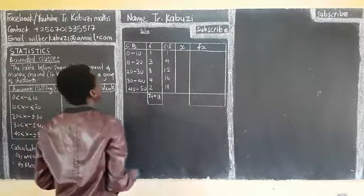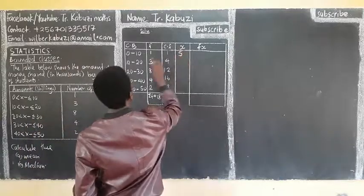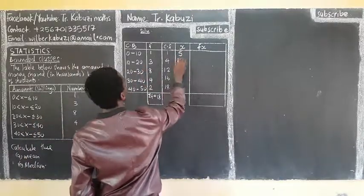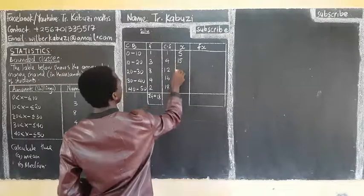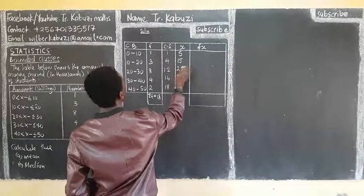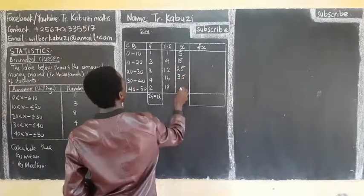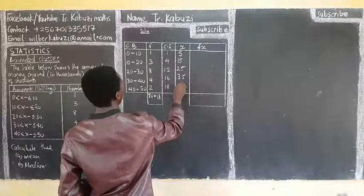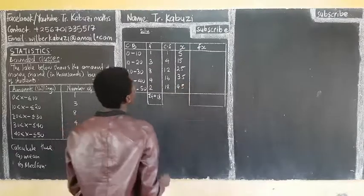Then our x here, we just make this, divide by this. We shall get five. Here we shall get fifteen. You just add on the first term. Twenty-five, thirty-five, then forty-five.